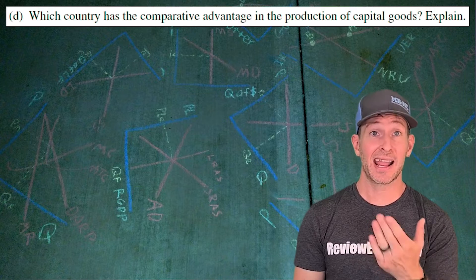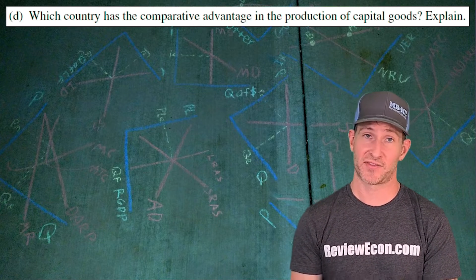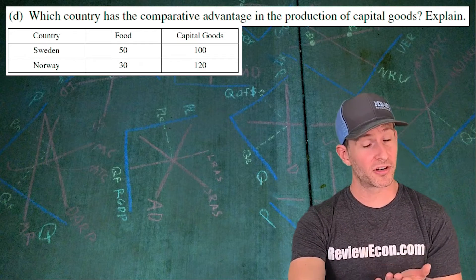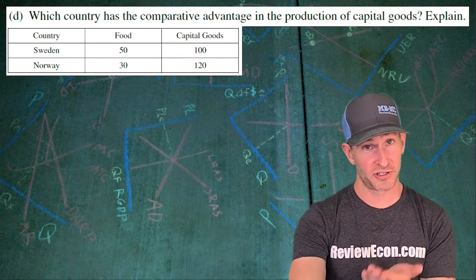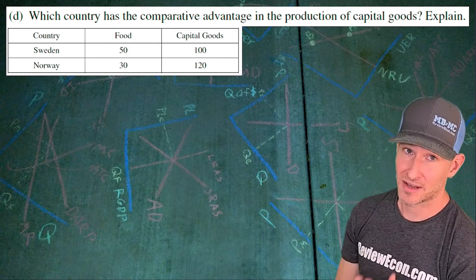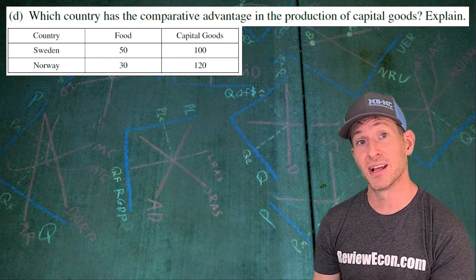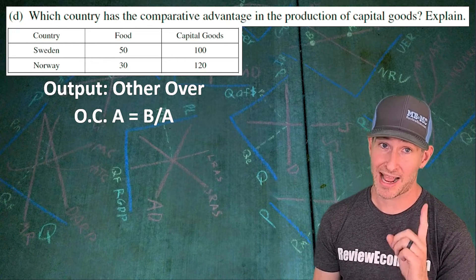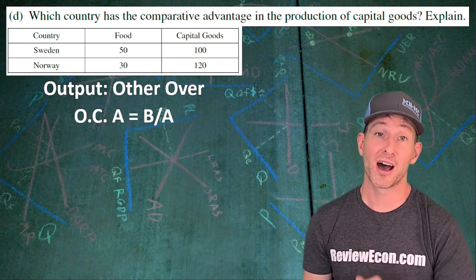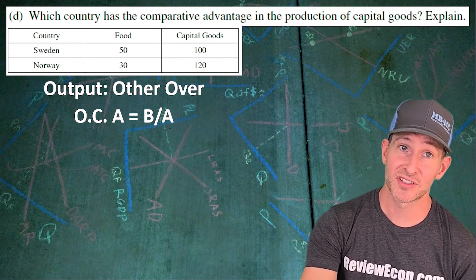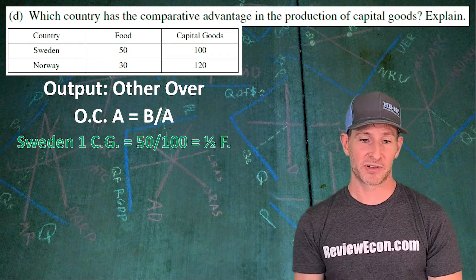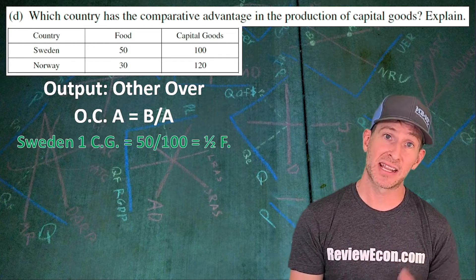For part D, we have to identify and explain which country has a comparative advantage in the production of capital goods. This is a math problem, and we need the numbers from the table. In order to find the comparative advantage, we have to calculate the opportunity costs of producing capital goods. Since the numbers in the table are units of output — finished units of food and finished units of capital goods — the formula is: the opportunity cost of A equals the units of B divided by A, which I remember as 'other over.' So the opportunity cost of Sweden producing one capital good is 50 food divided by 100 capital goods, which gives us one half a unit of food per capital good.